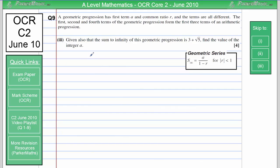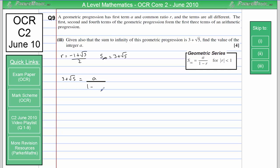In part 3, given that the sum to infinity of the geometric progression is 3 plus root 5, find the value of the integer A. The formula for sum to infinity is A over 1 minus R. From part 2, R equals minus 1 plus root 5 over 2. So we substitute: 3 plus root 5 equals A divided by 1 minus the quantity minus 1 plus root 5 over 2.